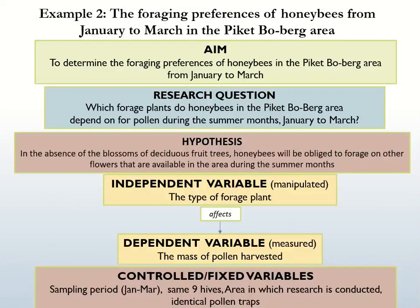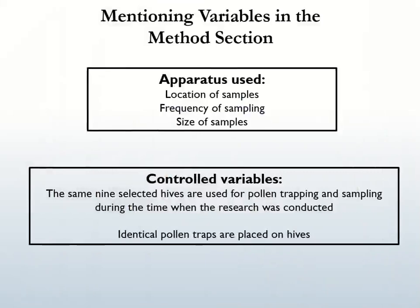Here is another example showing the relationship between the aim, research question, variables, and hypothesis — this time for an experiment looking at the foraging differences of honeybees from January to March. Remember, variables form an important part of all sections of your research, including the method section, because the quantitative aspects of your study are all related to your identified variables. These quantitative aspects include masses, volumes, incubation times, and concentrations. For the honeybee experiment, possible control variables were that the same nine selected hives were used for pollen trapping and sampling, and all pollen traps placed on hives were identical.